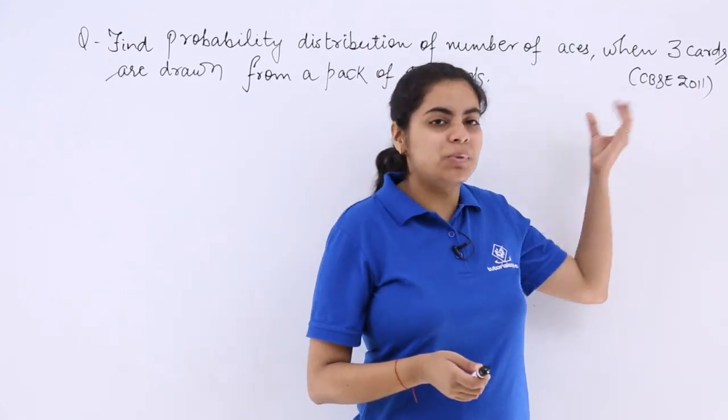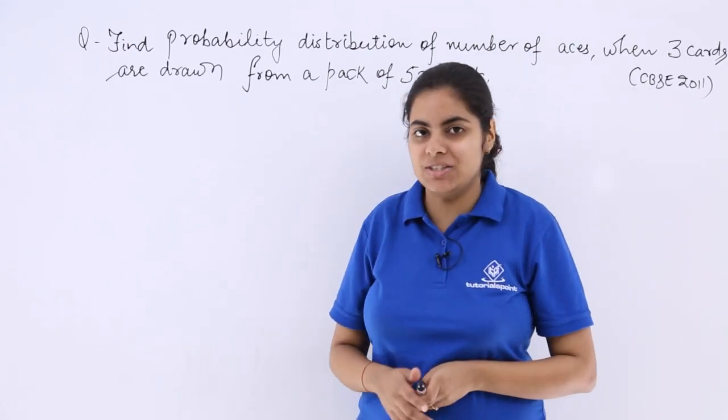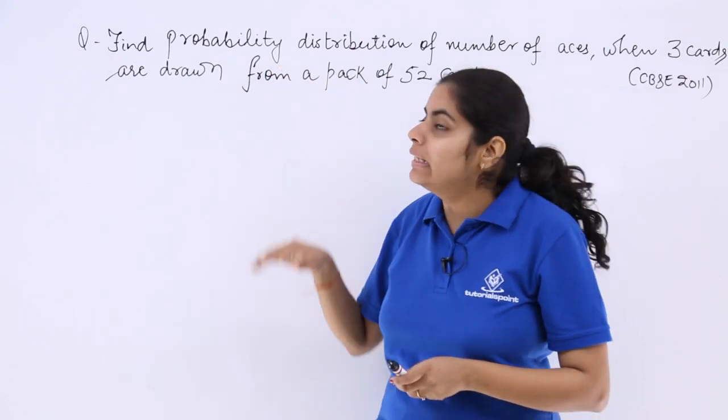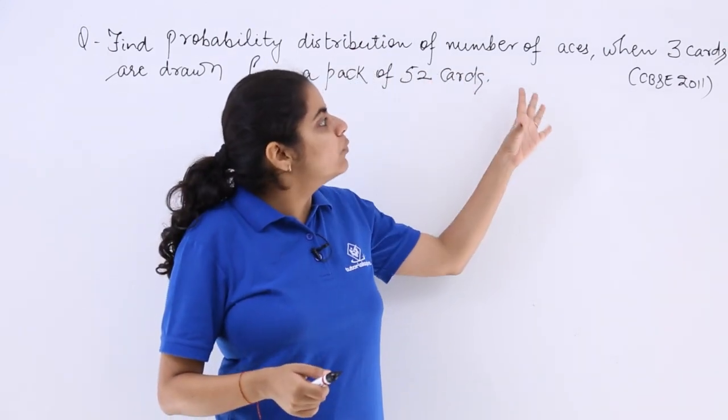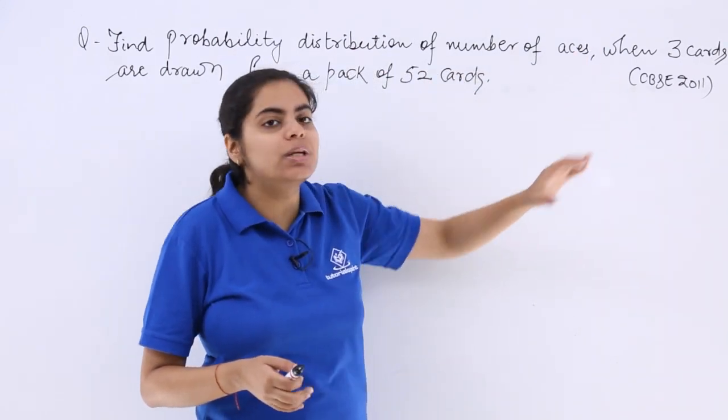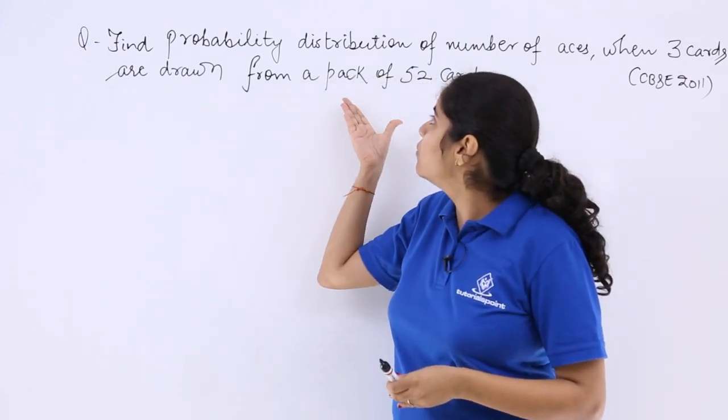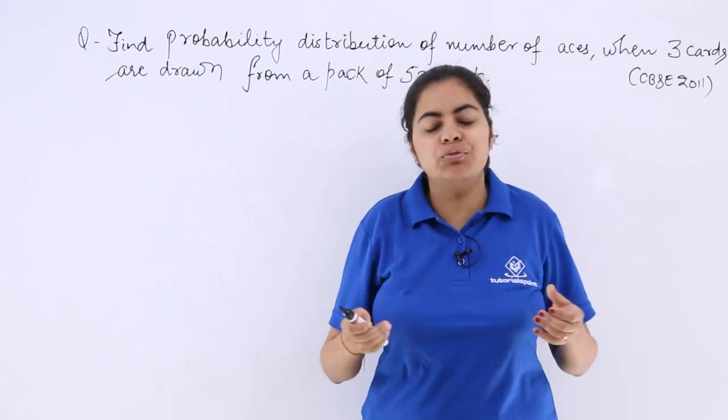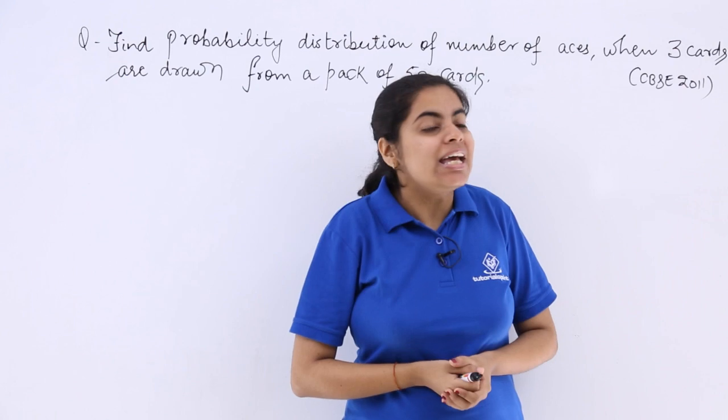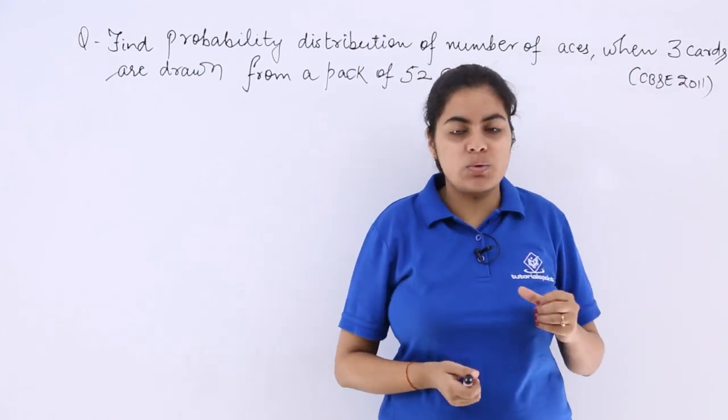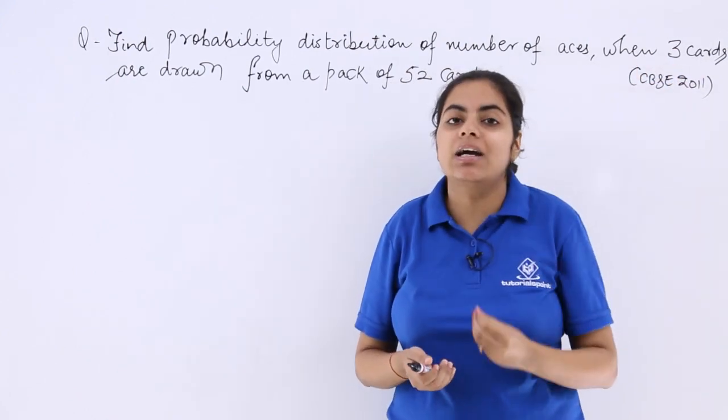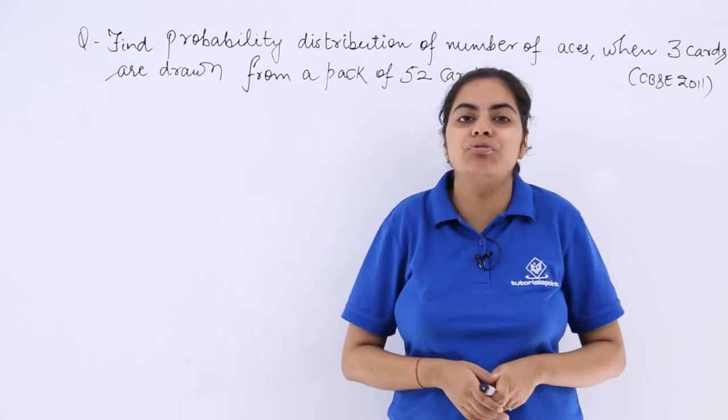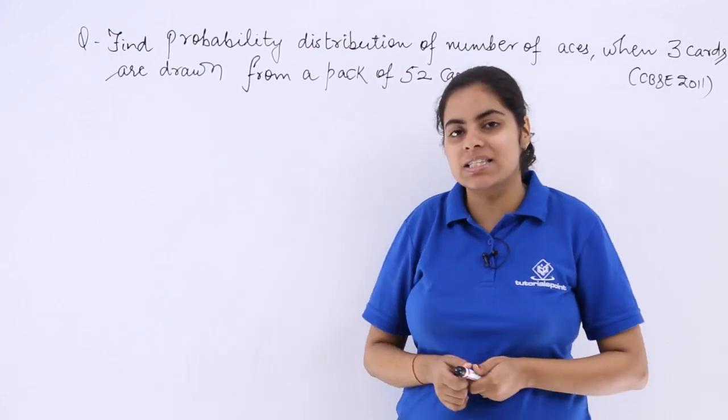Now again we have a CVSE previous year question 2011 question. It says find the probability distribution of number of aces when three cards are drawn from a pack of 52 cards. So if you have 52 playing cards, there are three cards which you are going to take out, and you have to find the probability distribution of the number of aces.